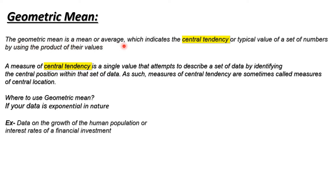The geometric mean is a mean or average which indicates the central tendency — it will find the central position within your data set. If you have many points in your data set and you want to find the center point, the geometric mean will help us find this central location.